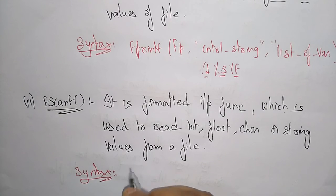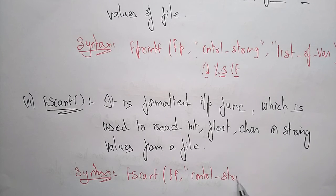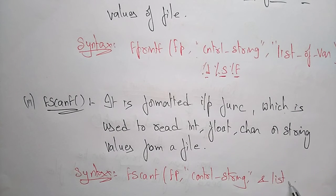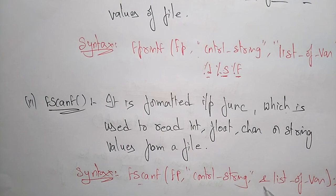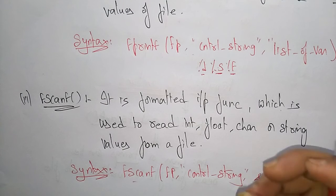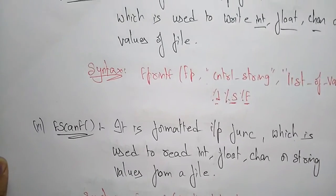The syntax for fscanf is: fscanf(file_pointer, control_string, &list_of_variables). The ampersand is used because scanf always takes the value from a particular address location — it reads the address and places the value at that address. This is the syntax of fscanf.